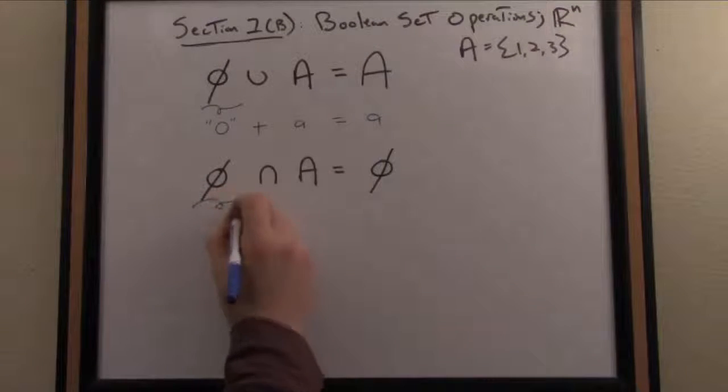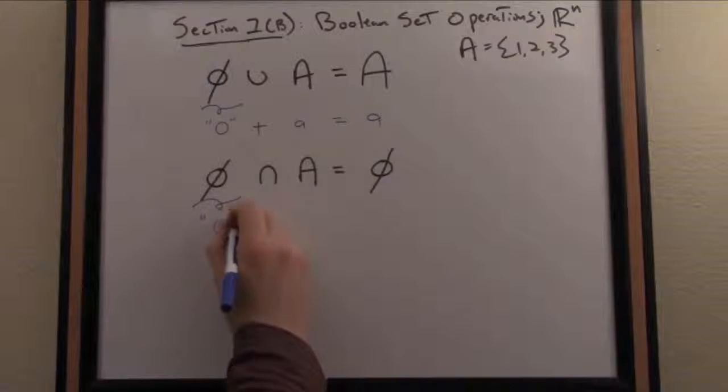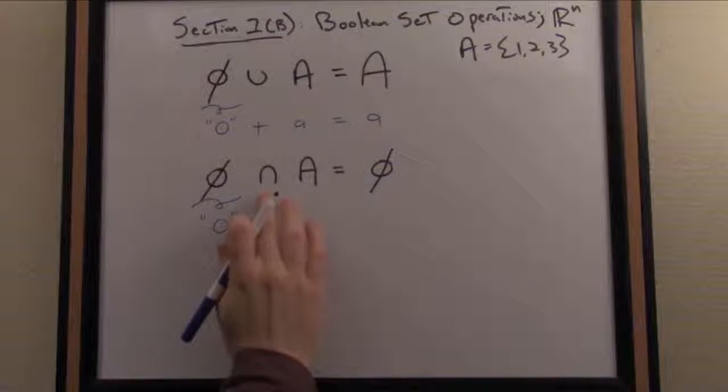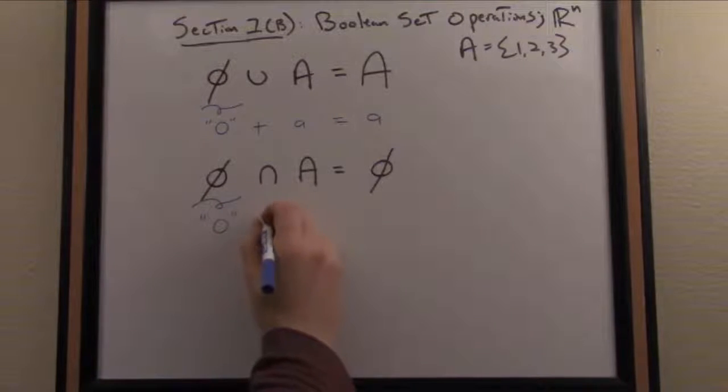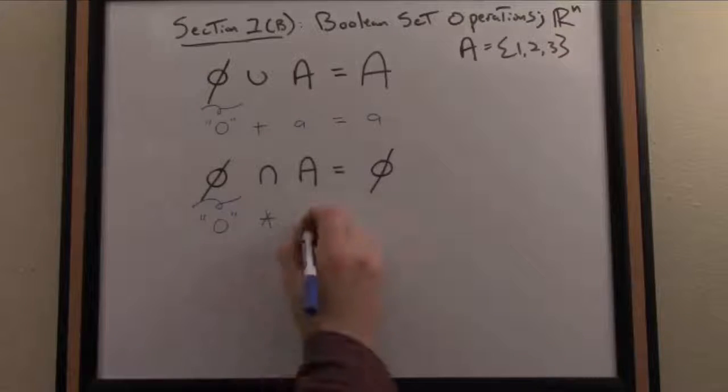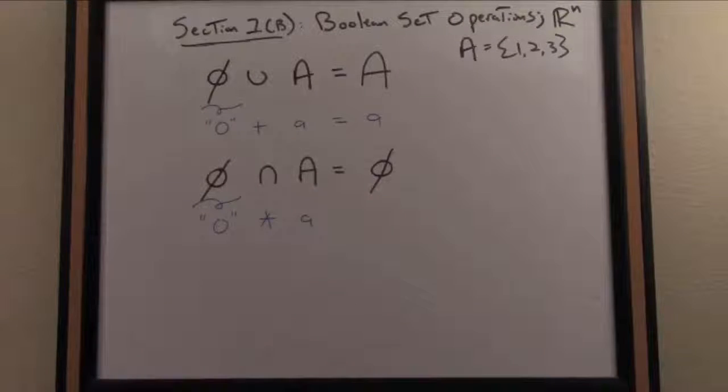The empty set acts like a zero here too. Let's think of intersection as the multiplication operation and the set A reduced to a single element or number a. If I take zero and multiply any number by zero, I get zero back. We see a nice analogy with the number zero in our common numbering system.